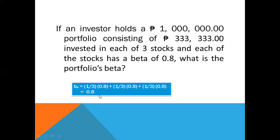This portfolio, with a beta of 0.8, is less risky than the market. It should experience relatively narrow price swings and have relatively small rate of return fluctuations. On a scatter diagram, the slope of the regression line would be 0.8, which is less than that for a portfolio of average stocks, since the average stock portfolio has a beta of 1.